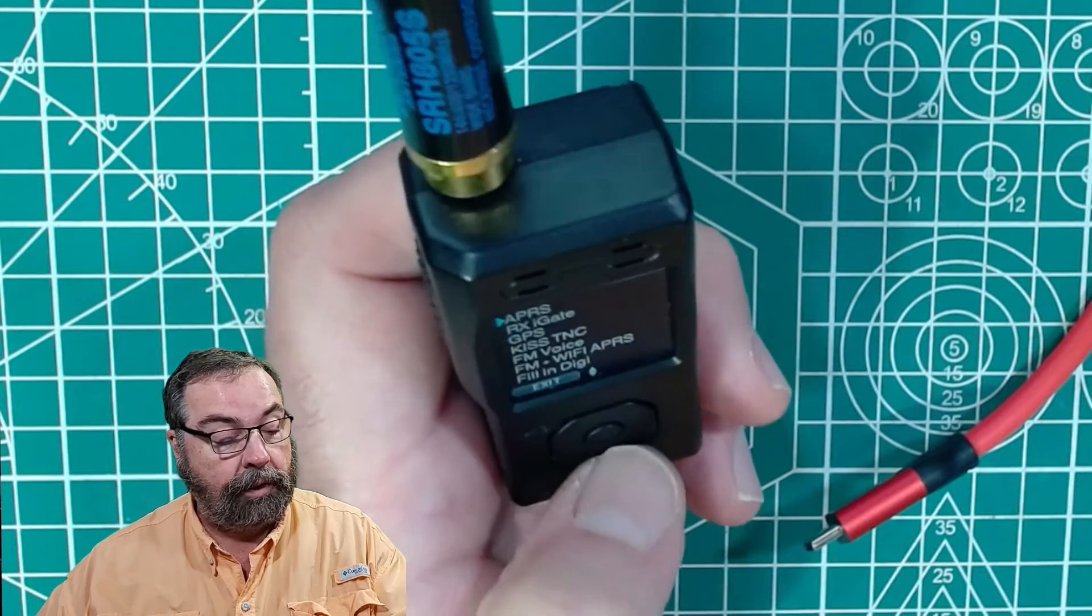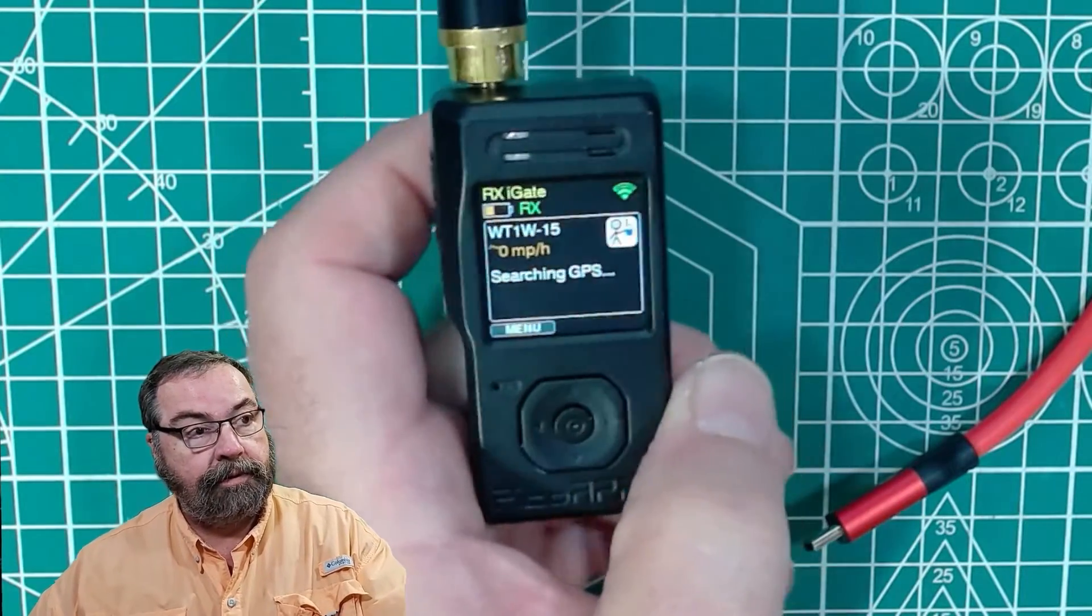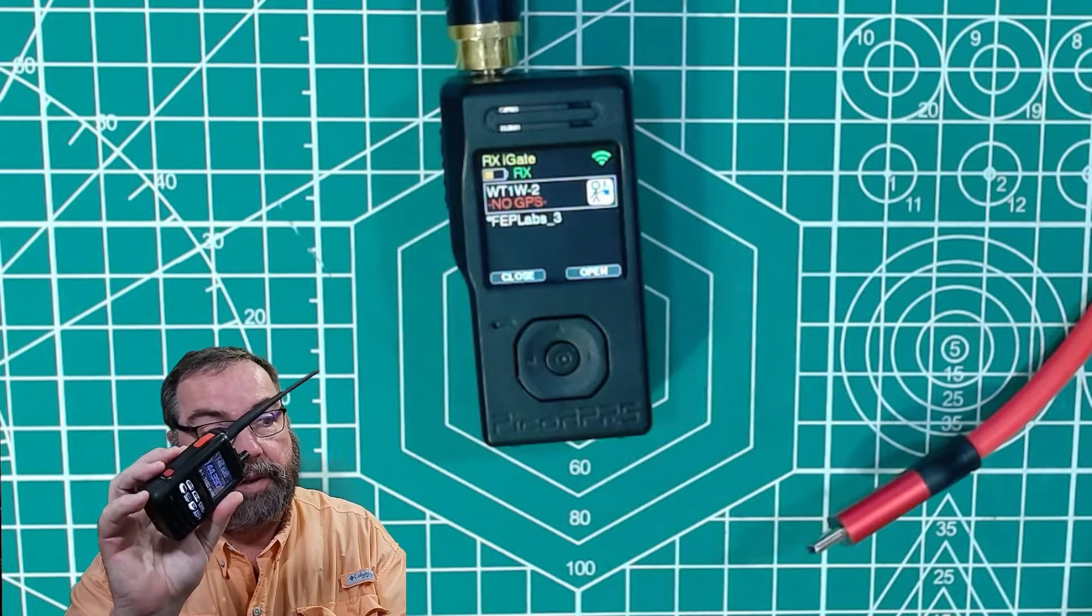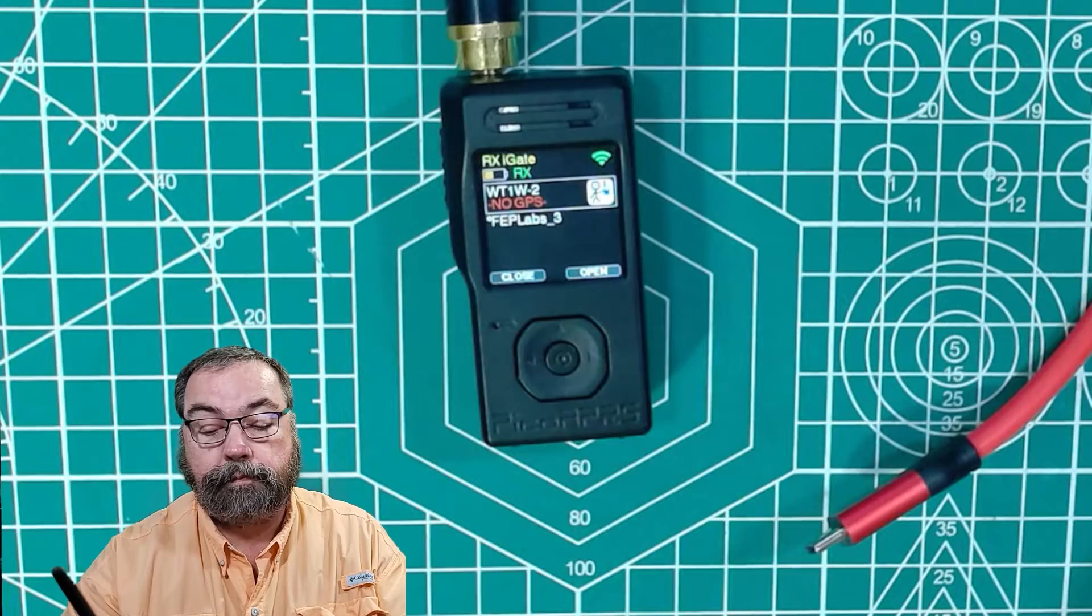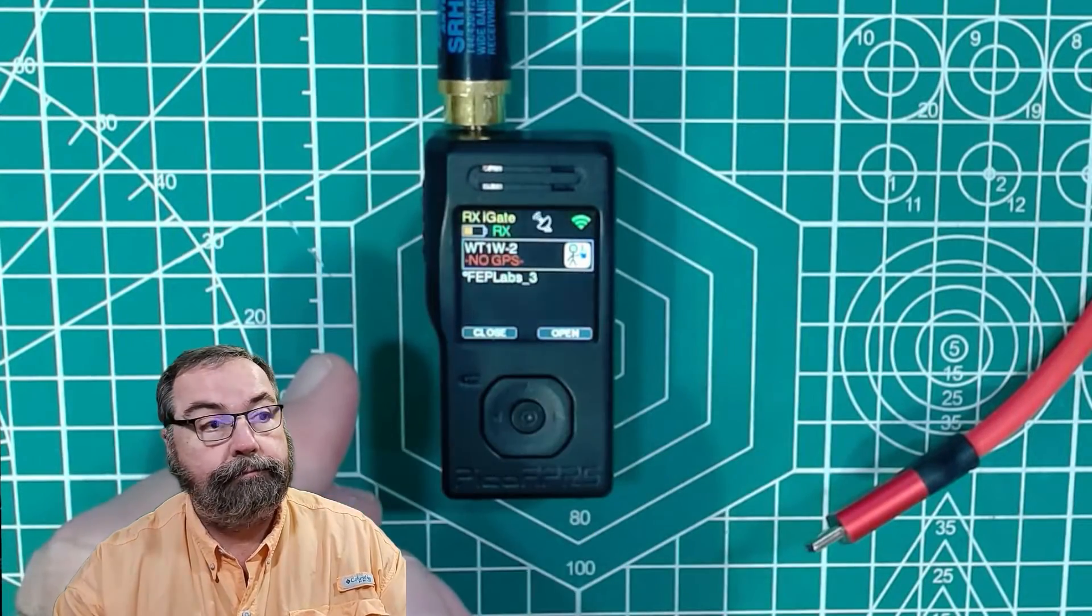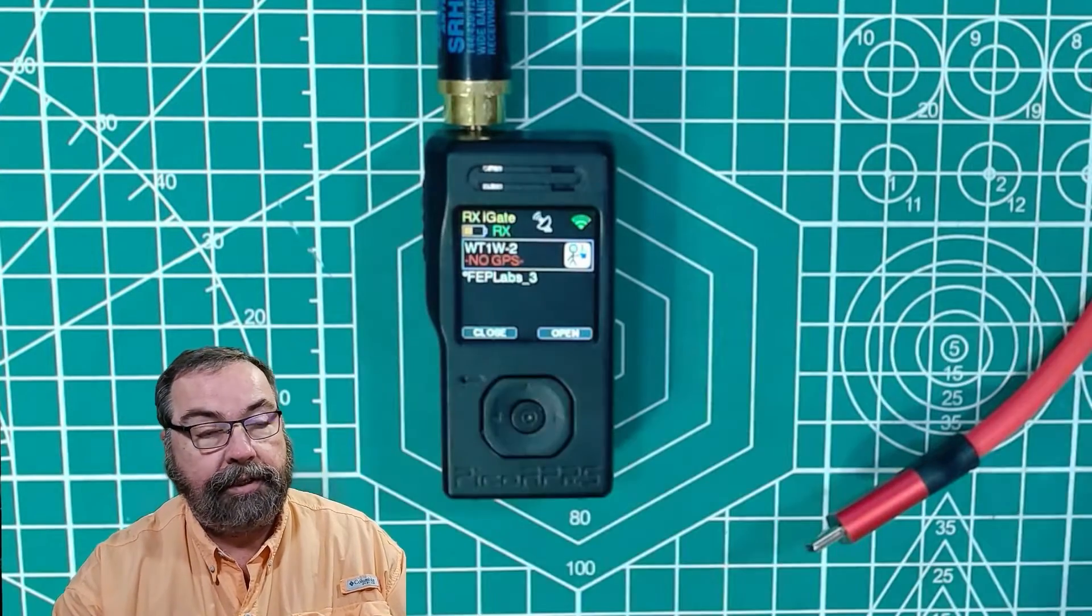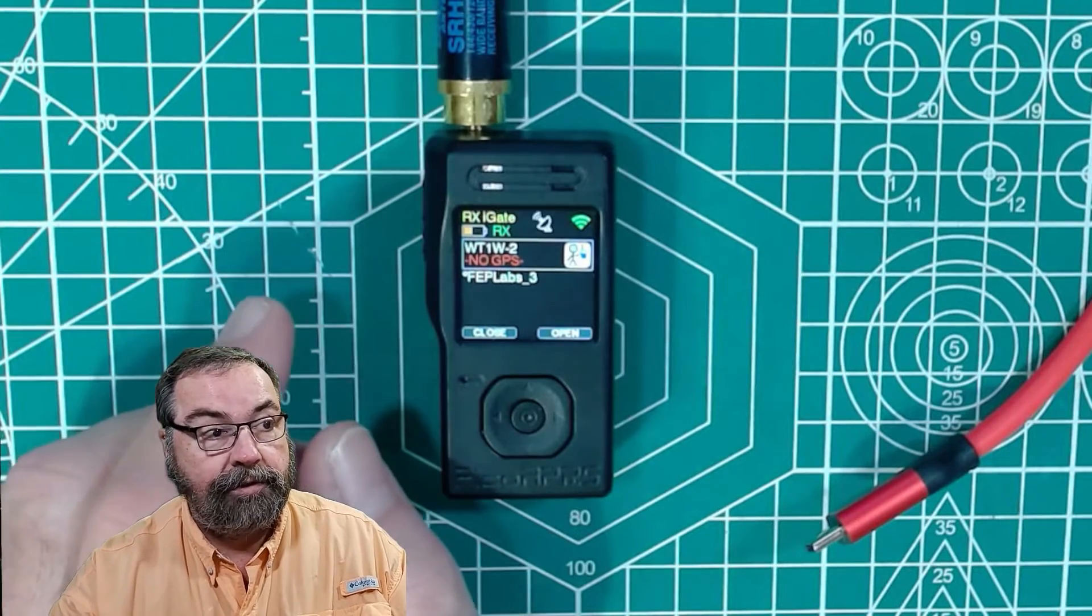So if we change our modes and we go to receive only iGate, it'll connect to my local internet and it is now an iGate. I've set my FT5D into APRS and I'm going to do a manual beacon. And if you watch this, you can see I've already done it. It updates and it is rebroadcast in my APRS over the internet. So it functions as an iGate.